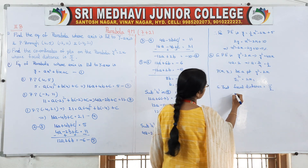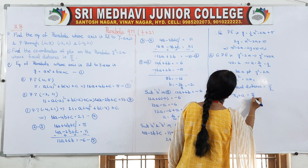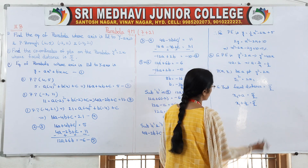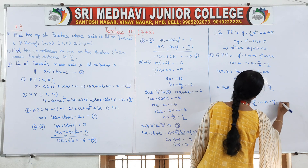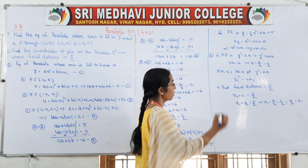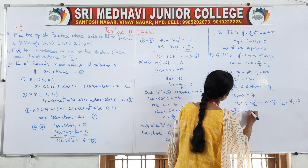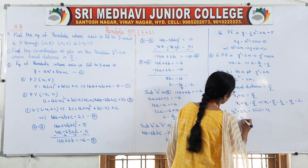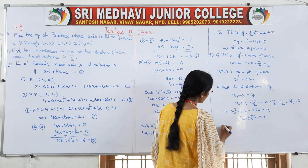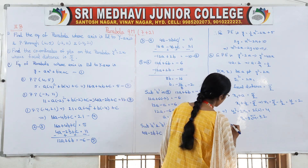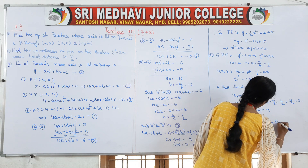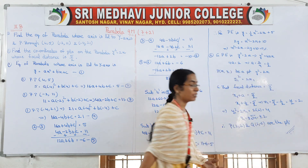Using focal distance: x₁ + 1/2 = 5/2, so x₁ = 5/2 - 1/2 = 4/2 = 2. If x₁ = 2, then y₁² = 2(2) = 4, so y₁ = ±√4 = ±2. Therefore the two required points are P(2, 2) and Q(2, -2).